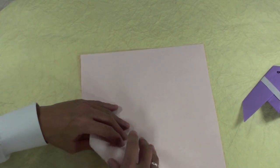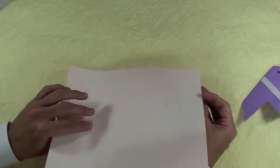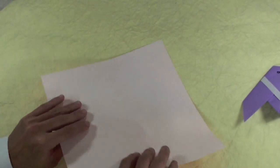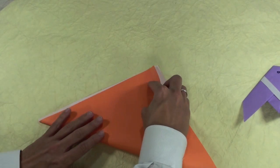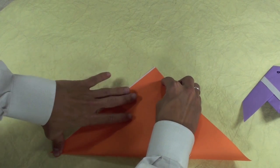You're going to use a square sheet of paper, like this one. So first, fold the paper in half. Like this.